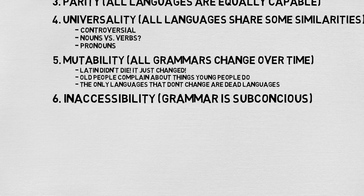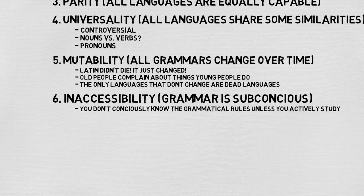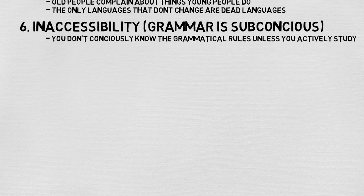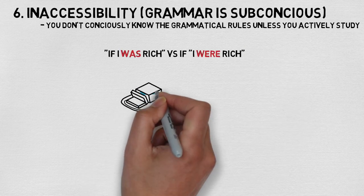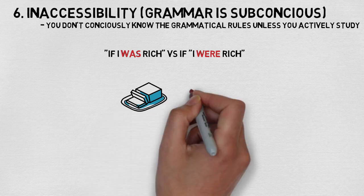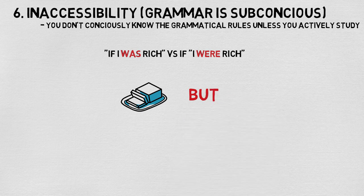Number six: inaccessibility means that grammar is subconscious. Without formal education or reflection, people generally do not consciously know the rules of their native language. Probably the best example of this is asking people to explain when to use who vs. whom, was vs. were — as in 'if I was rich' or 'if I were rich' — and why the T sound in butter sounds different than the T sound in butt. All of these instances have explanations, but most people, unless they've consciously studied linguistics, aren't able to give you the rules for these examples.